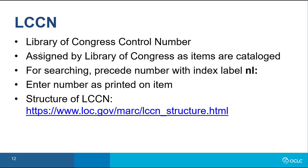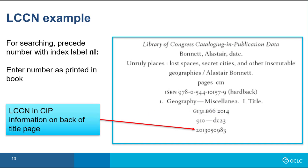Library of Congress assigns LCCNs as it catalogs items. The LC control number was formerly called the LC card number, and they were first issued in 1898. Before January of 2001, LCCNs consisted of a two-digit year corresponding to the year the item was cataloged and a six-digit serial number. This number was often displayed with a hyphen separating the year and the serial number. After December 2000, LCCNs consist of a four-digit year and a six-digit serial number. LCCNs sometimes have alphabetic prefixes. The LCCN is almost always in the CIP information on the title page verso.